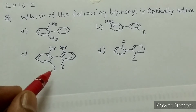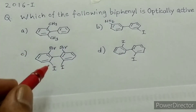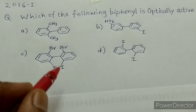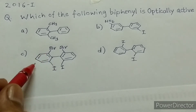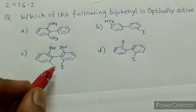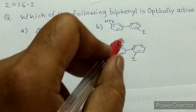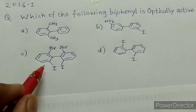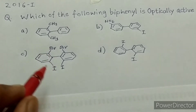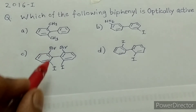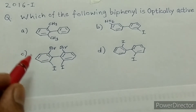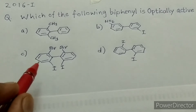In biphenyls, the bulkier groups present on the ortho position make the molecule non-planar, and the molecule becomes a non-superimposable mirror image. In option C, bulkier groups are present on the ortho position. In option D, only one ortho substitution is present, so the bulkier groups are not present. Therefore, option C is the correct answer, because the bulkier groups make the molecule non-planar and non-superimposable. The biphenyl in option C shows optical activity.